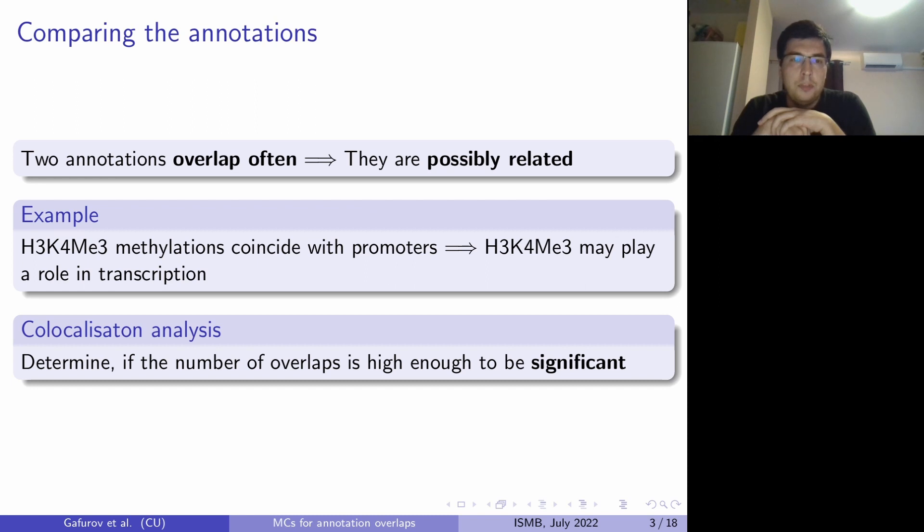For example, if a certain methylation coincide with promoter regions, we can conclude that this particular methylation may play a role in the transcription process. So the task which is before us is to determine whether the number of overlaps is high enough to be significant. That's called colocalisation analysis.